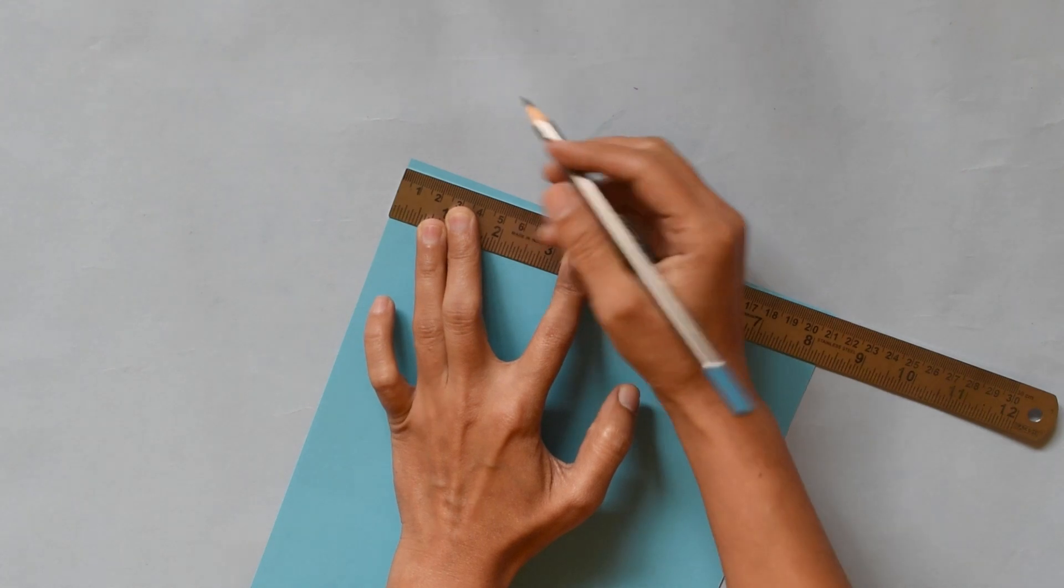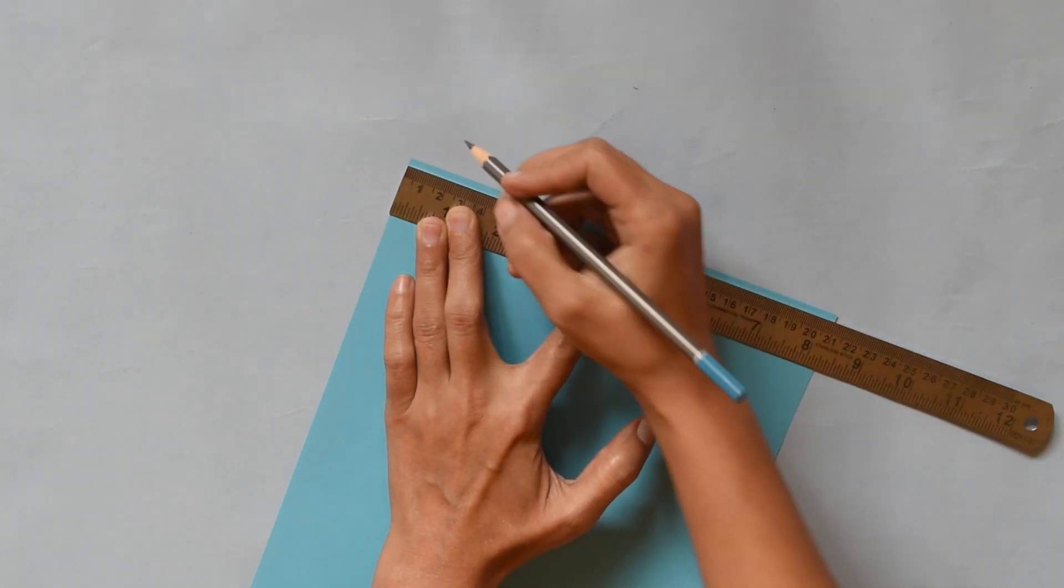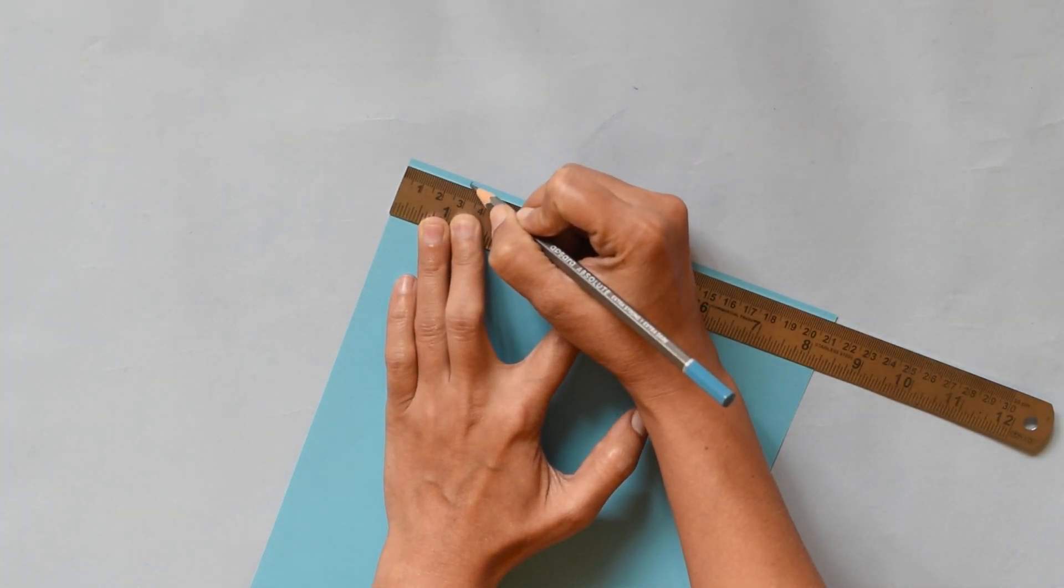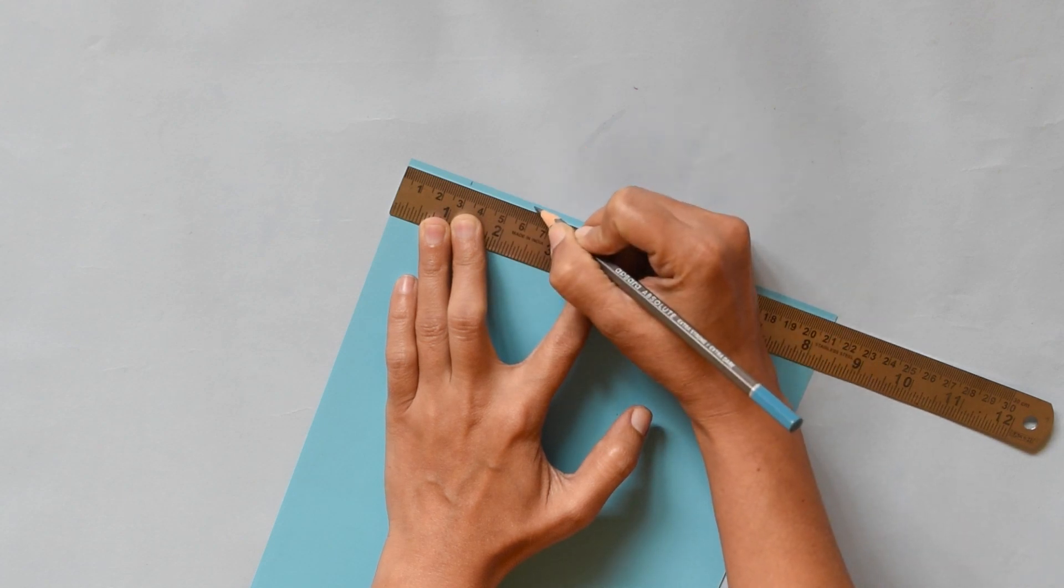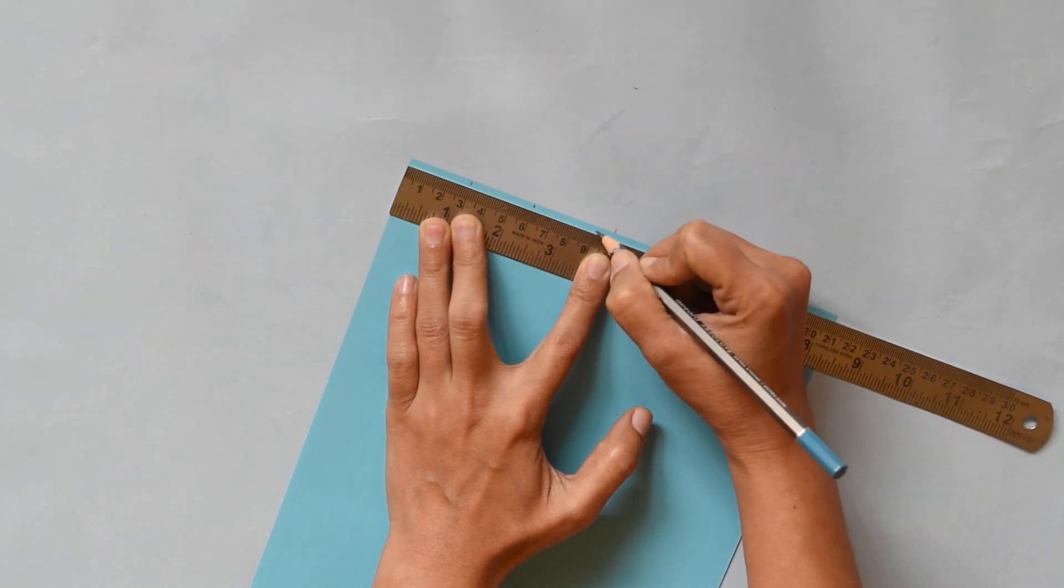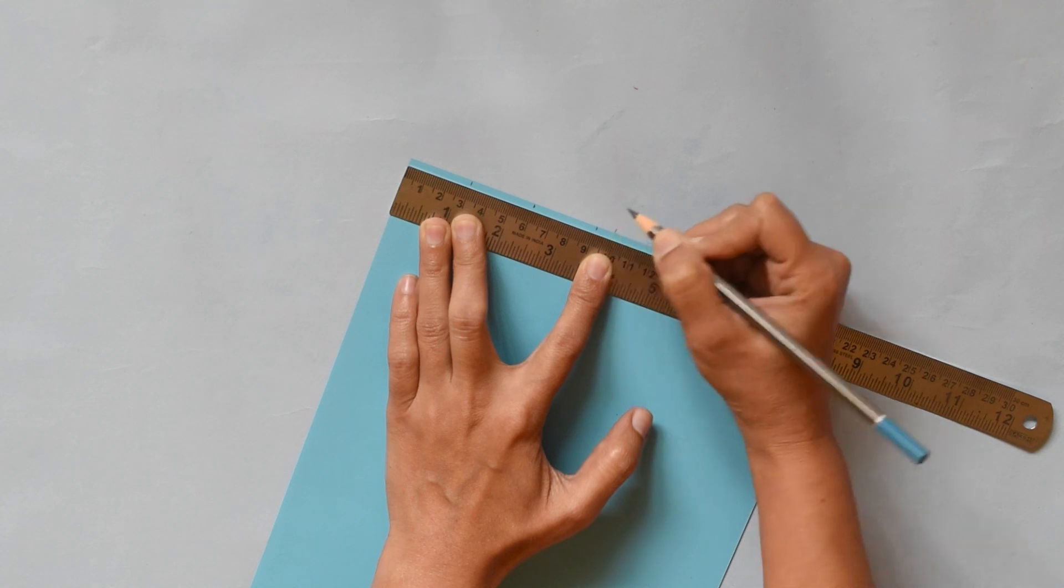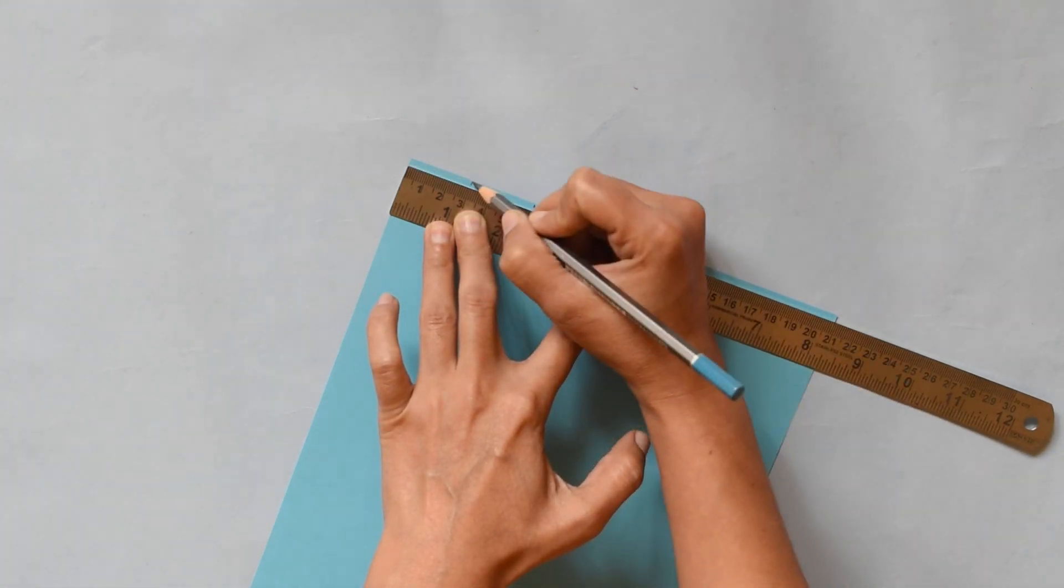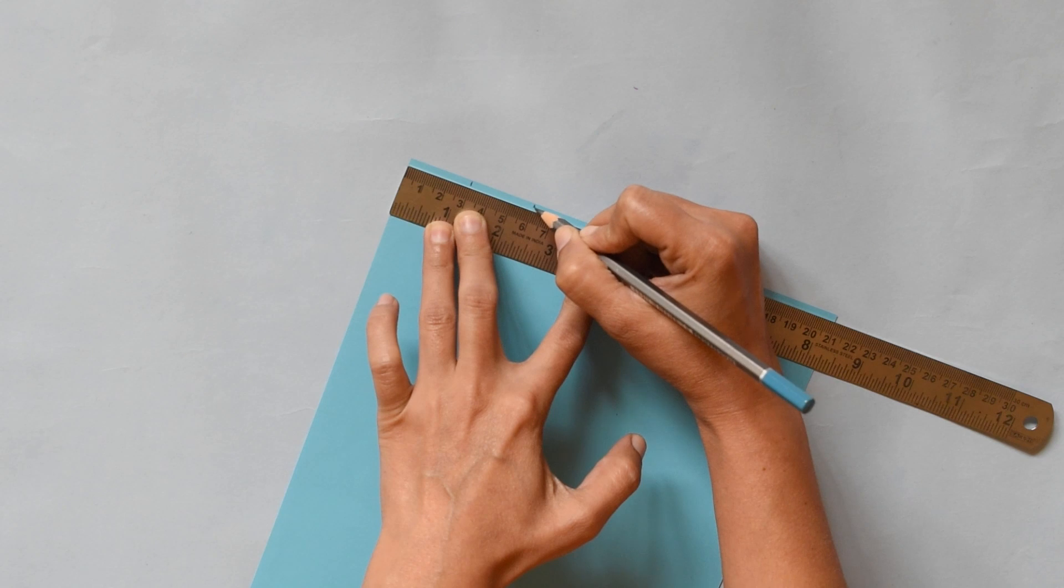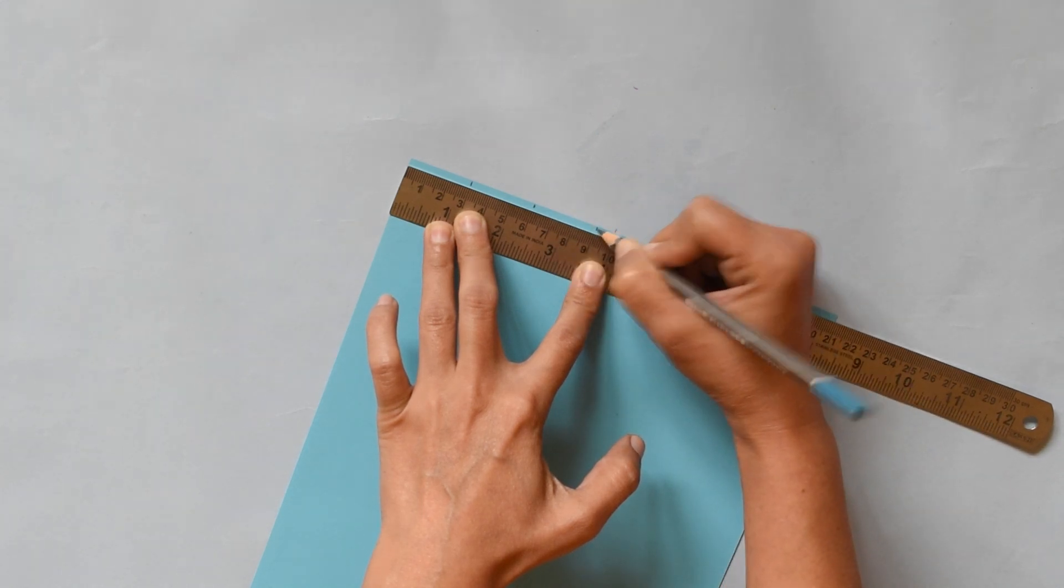So here I mark at 3 cm. This is 3, plus 3, 6, plus 3, 9. So I have marked here at 3, 6, and 9.